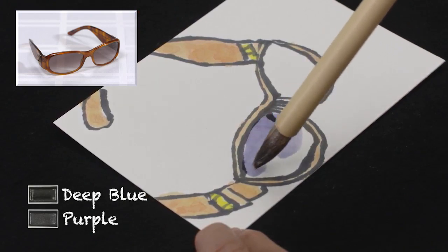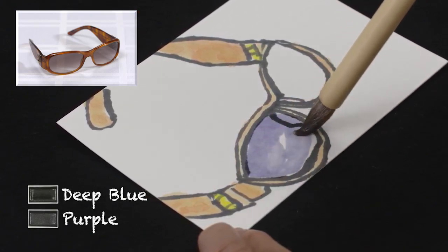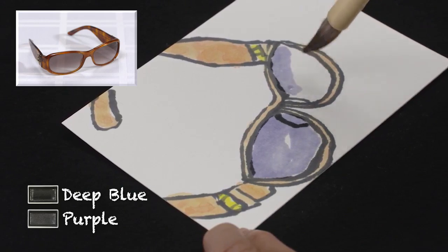For the lenses, use the gradient brush and load it with a very wet deep blue and purple to paint them.